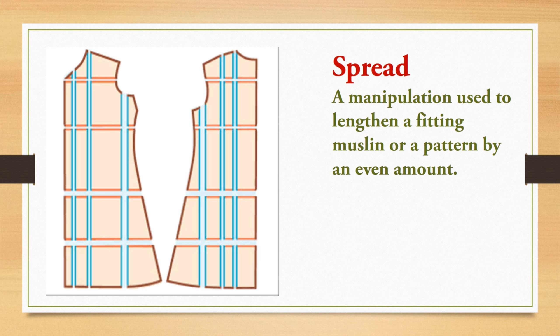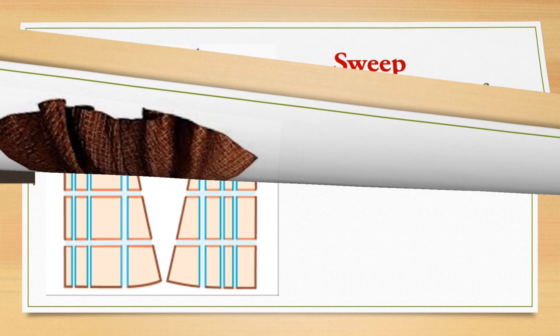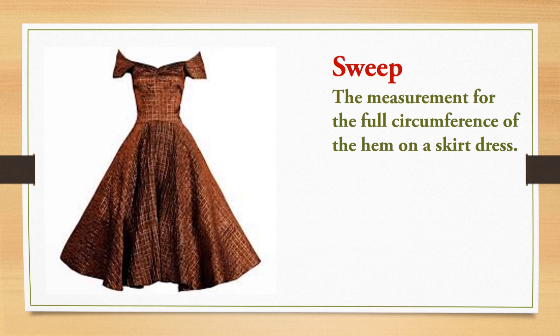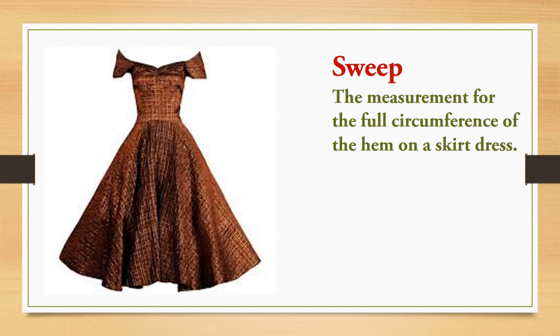Next is spread. Spread is a term used in grading. This is the simplest way to grade a garment — to increase the size, specifically in the lengthwise or widthwise direction. We generally slash that particular area and then spread it to the desired length or breadth. This term is called the spread.